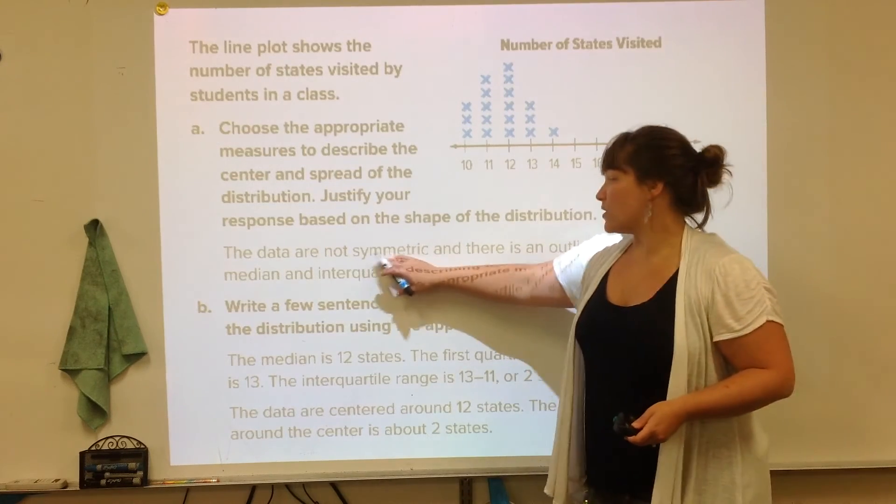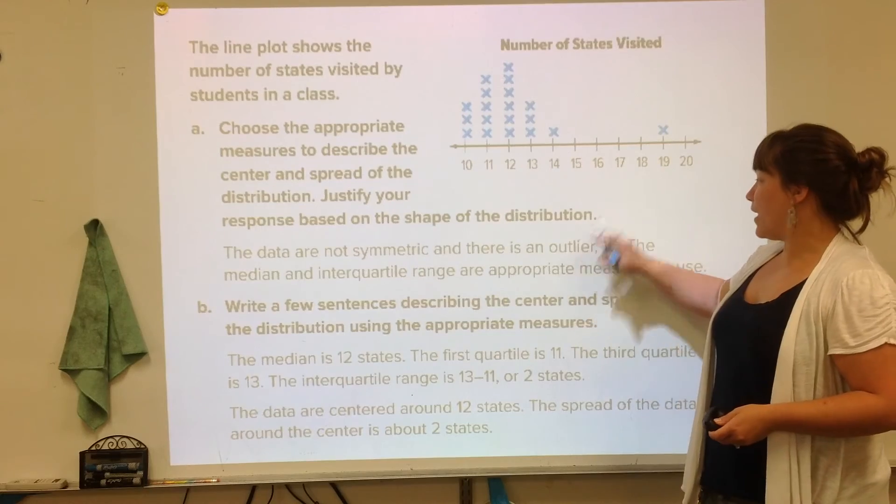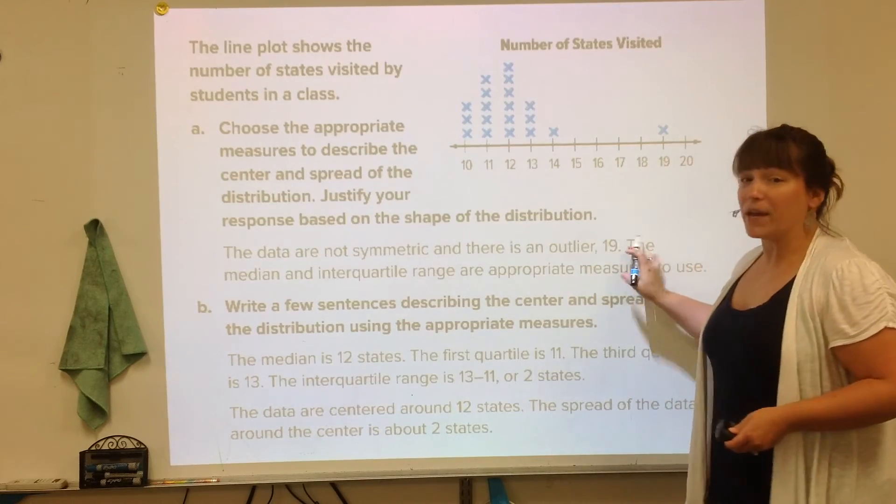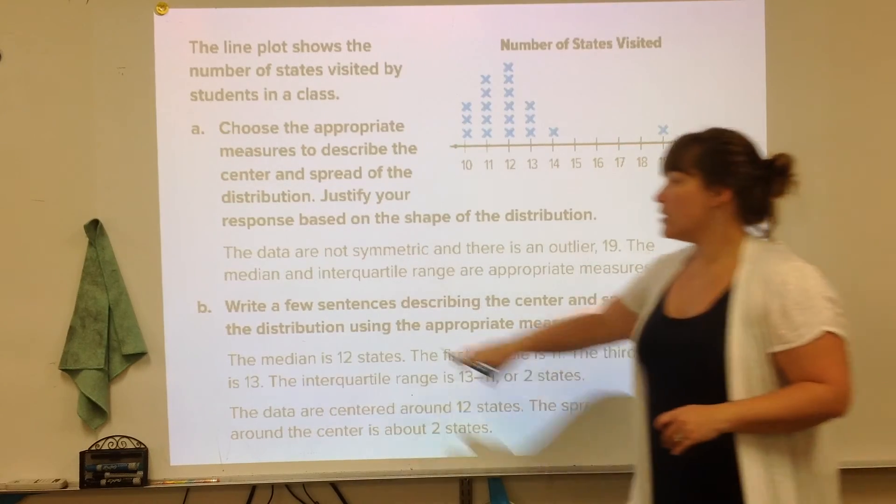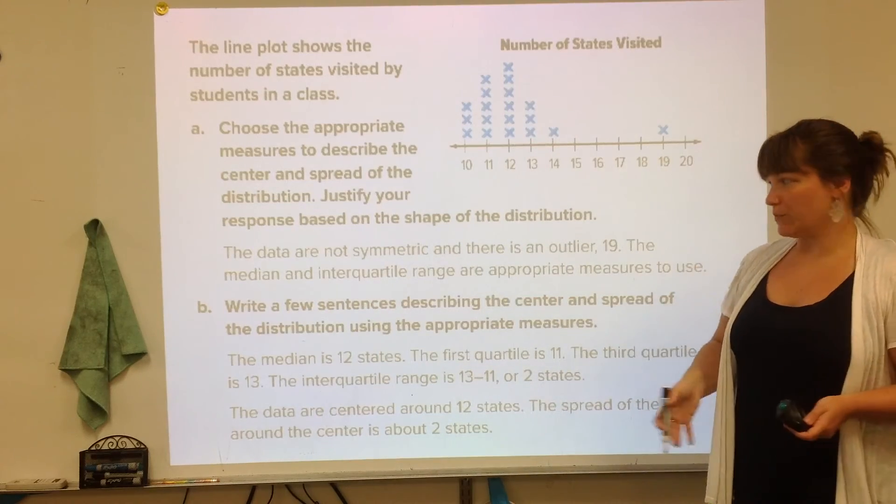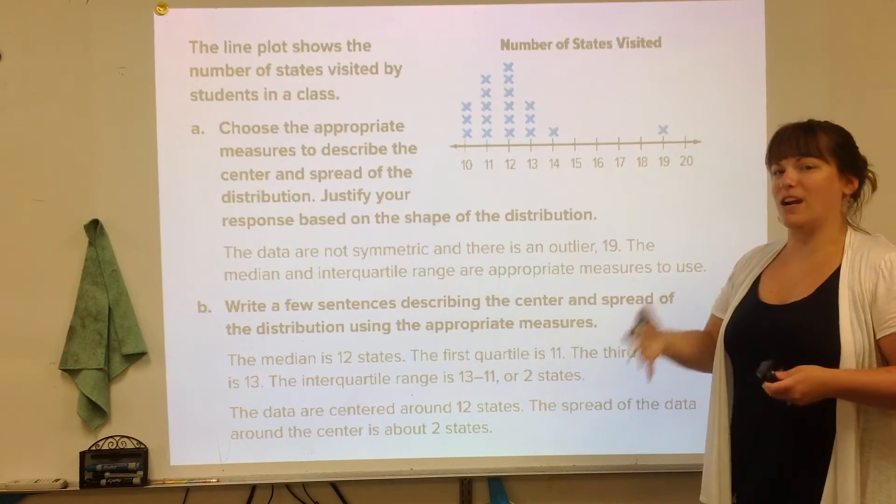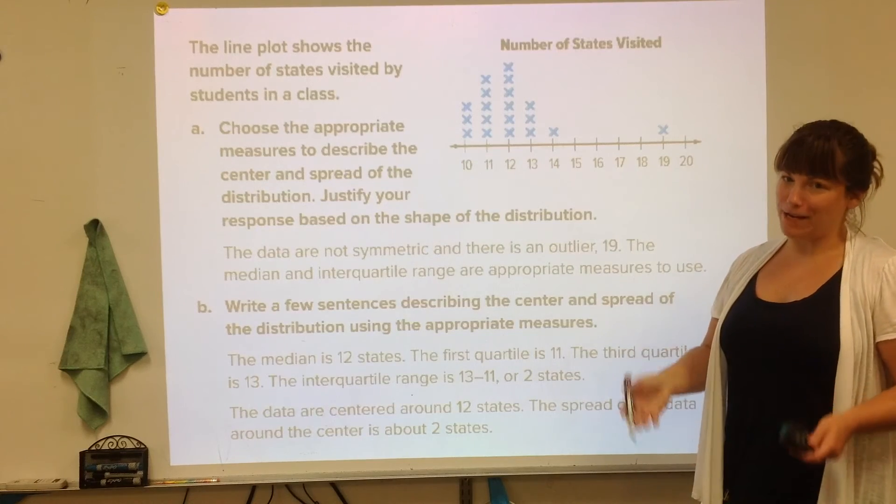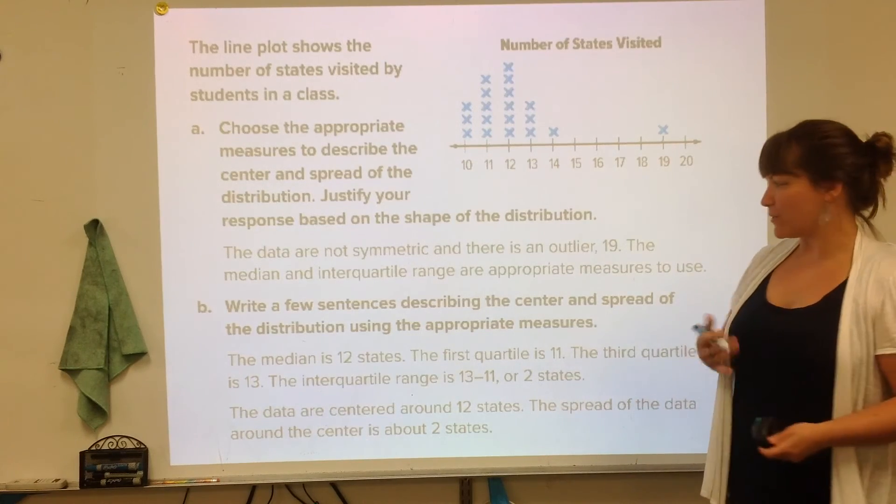Those are the two choices and it depends on whether it's symmetrical or not. The data is not symmetric and there is an outlier. So we're going to pick, according to that flowchart, the median and the IQR to use.